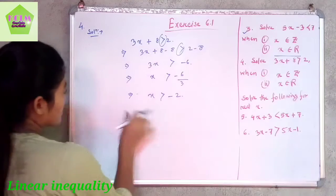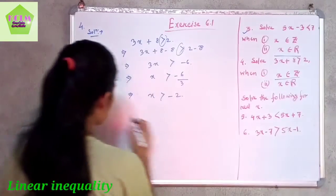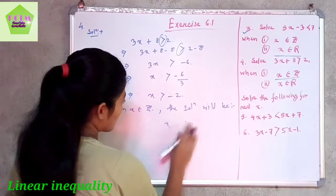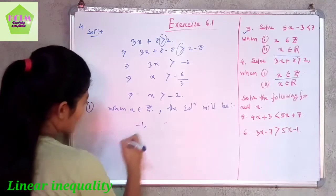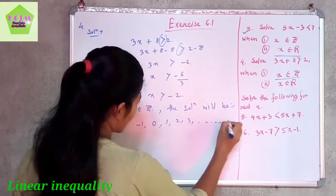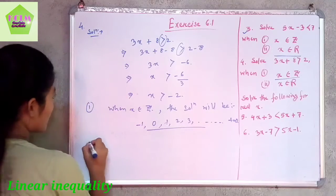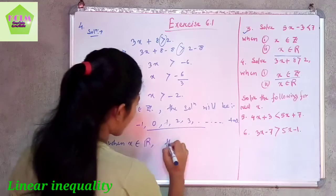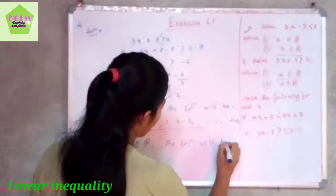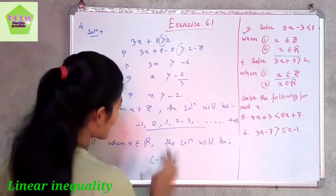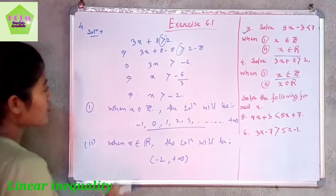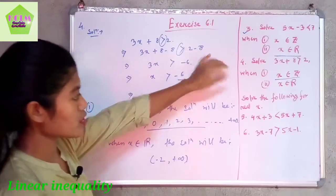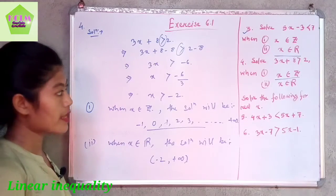Dividing by plus 3 on both sides gives x greater than minus 2. When x belongs to the set of integers, the solution is: minus 1, 0, 1, 2, 3, up to plus infinity. When x belongs to the set of real numbers, the solution is the open interval minus 2 to plus infinity.